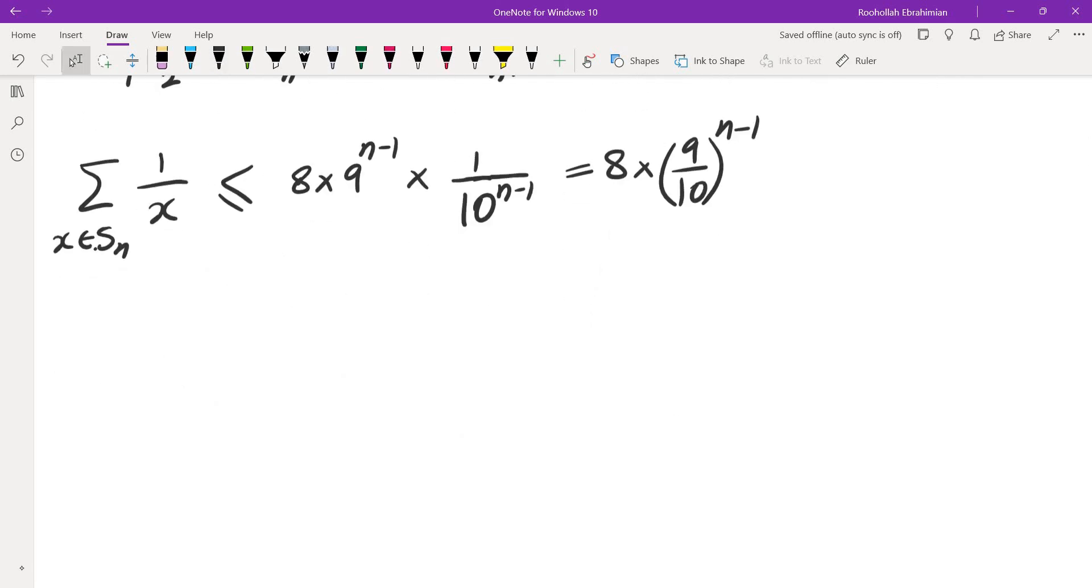Now if you look at the sum of 1 over X when X is in S, this would be less than or equal to the sum from N equals 1 to infinity of 8 times 9 to the power of N minus 1 over 10 to the power of N minus 1. Because the sum of the reciprocals of elements in S_N is less than 8 times 9 over 10 to the power of N minus 1, and N would be the number of digits, so it could range from 1 to infinity.